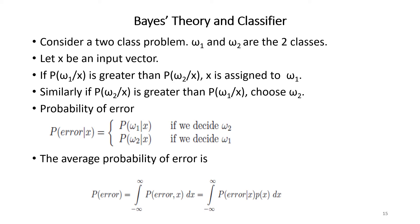Next is Bayes theory and the classifier. Consider a two-class problem. Let omega_1 and omega_2 be the two classes and x be an input. If the posterior probability p(omega_1 | x) is greater than p(omega_2 | x), x can be assigned to class omega_1. Similarly, if p(omega_2 | x) is greater than p(omega_1 | x), then omega_2 is the assigned class. The probability of error is given by p(error | x) equal to p(omega_1 | x) when deciding for omega_2, and p(omega_2 | x) when the decision is omega_1.